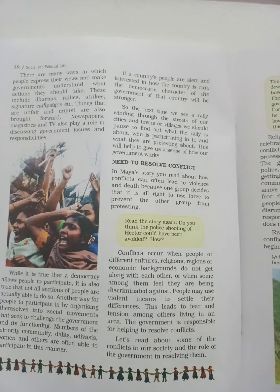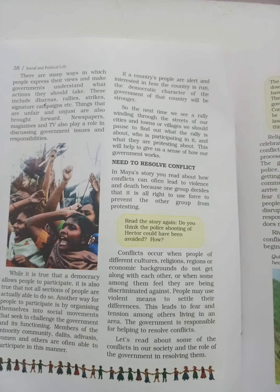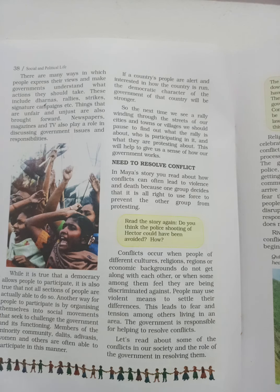Through rallies and many other ways, people express their views and make the government understand what actions they should take. These include dharnas, rallies, strikes, and signature campaigns. Things that are unfair and unjust are also brought forward. Newspapers, magazines, and TV also play a role in discussing government issues and responsibilities. If the government's decisions are against the people, people raise their voice through newspapers, channels, dharnas, rallies, and strikes.